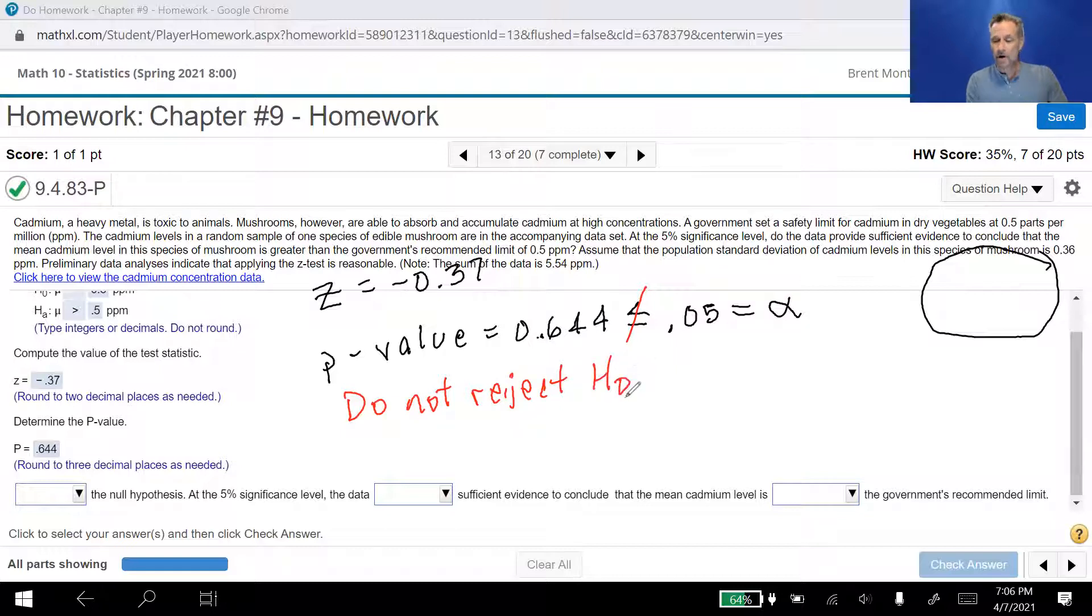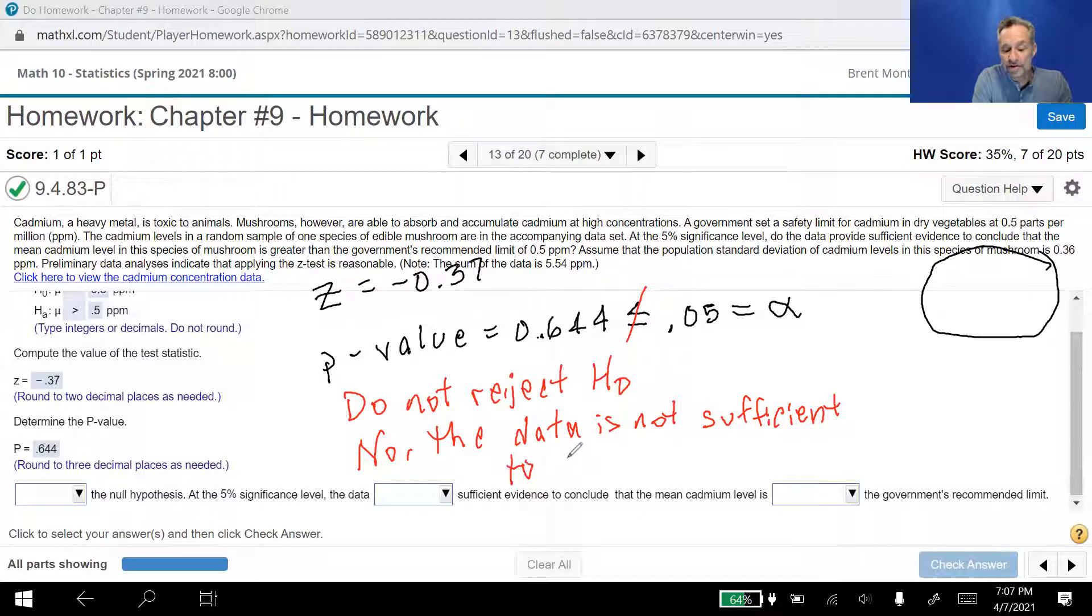And I've got a video on P value if you want to look at that to get in mind what P value is. But essentially, P value, that's the probability we would get our sample results or something more extreme if the null hypothesis were true. Well, our cutoff, our significance level says, hey, I'm only going to reject that the null hypothesis is true if I get a value, a probability of that value being 5% or less. I didn't get 5% or less, so it says the null hypothesis might be true. So I can't reject it. And so the answer to the question when it says, are the cadmium levels greater than the government's recommended limit of 0.5 parts per million? I have to say no.